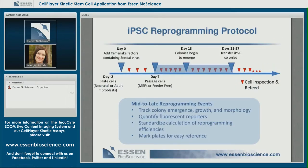Moving on to the middle to late reprogramming events — you can watch the evolution of these emerging colonies. Every day I sat at my desk with coffee and used the automatic panning tool to move through all my wells imaged during reprogramming. As interesting colonies emerged, I labeled them as points of interest and tracked those specific colonies within the software. If you have fluorescent monitors, you can image in both phase and red or green fluorescence and monitor your reporters through the process.